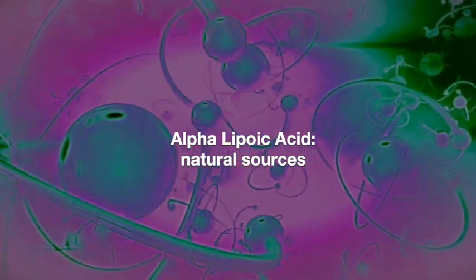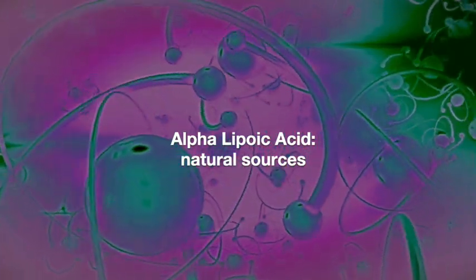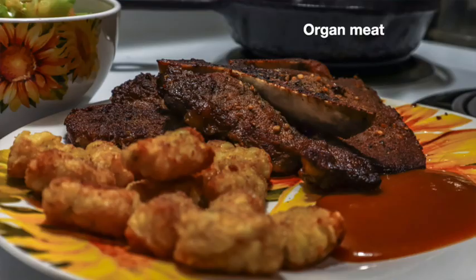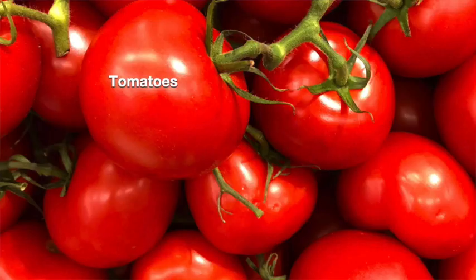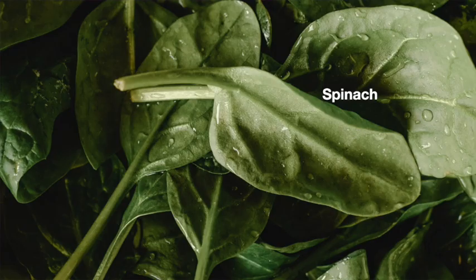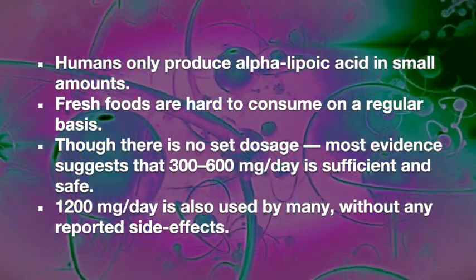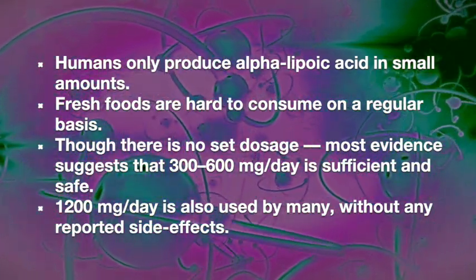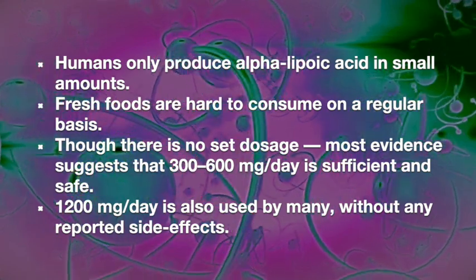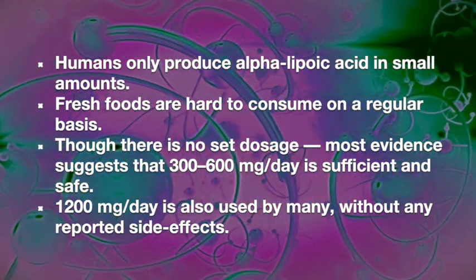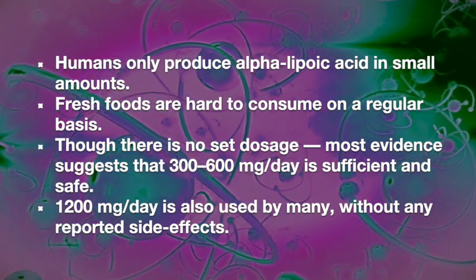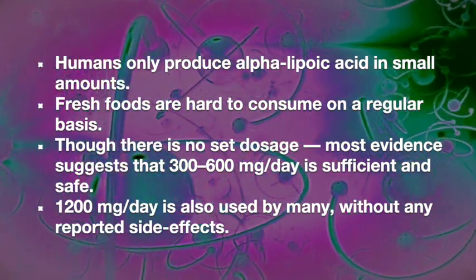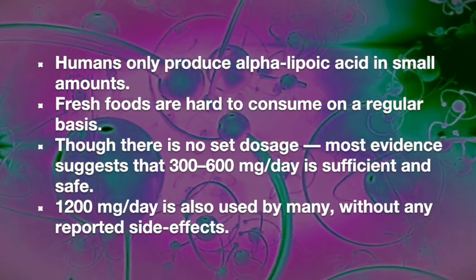Let's look into some of the natural sources of Alpha Lipoic Acid: red meat, organ meat, green peas, tomatoes, and spinach, to name a few. Humans only produce ALA in small amounts and fresh foods are hard to consume on a regular basis, so supplementation may be necessary. Typically 300–600mg is sufficient and safe, but 1200mg is also used by many without any reported side effects.